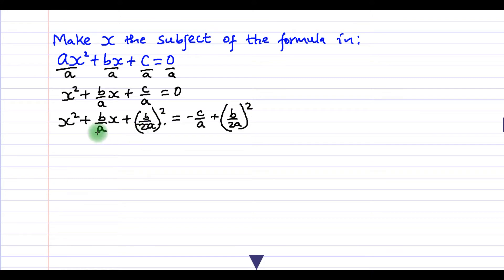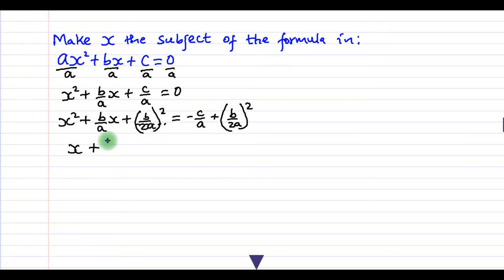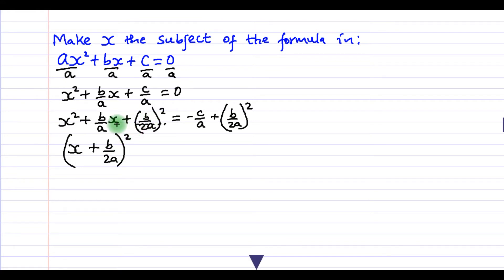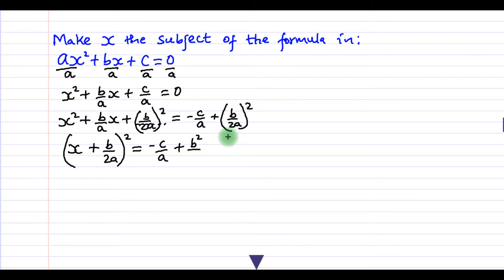The left hand side can now be written as the perfect square: x plus b over 2a, all squared. The right hand side becomes minus c over a plus b squared over 4a squared, since 2 squared is 4 and a squared is a squared.